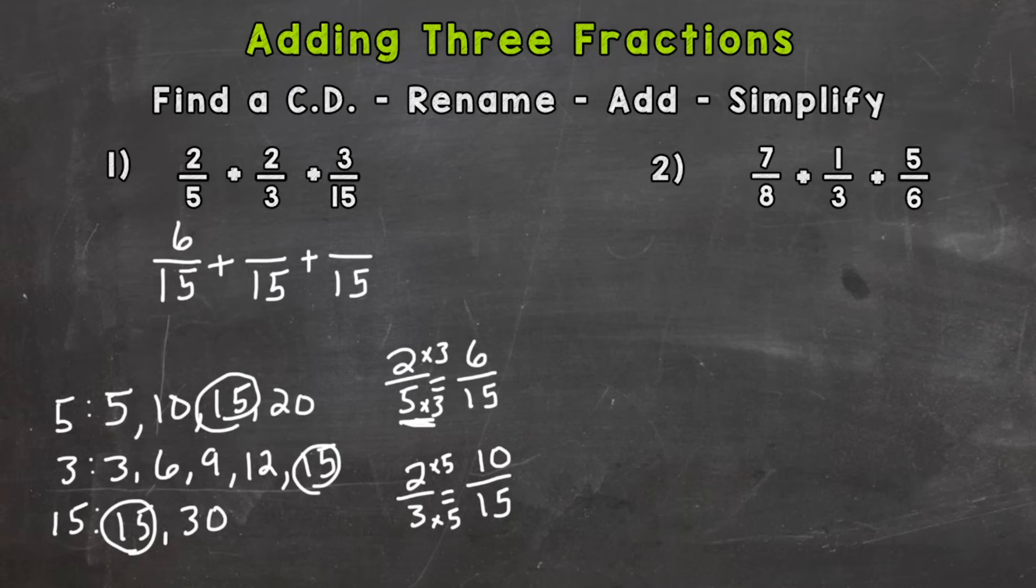So 2 thirds is equal to 10 15ths. Now our last fraction 3 15ths is already out of 15 so we do not need to rename. We keep it as is. Now all our fractions have a denominator of 15 so we're able to add. So we found a common denominator first. We renamed with that common denominator. Now we add.